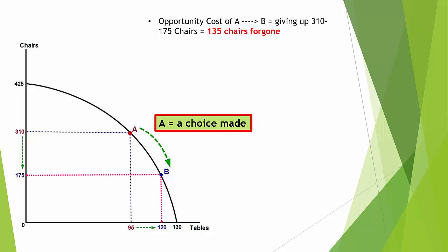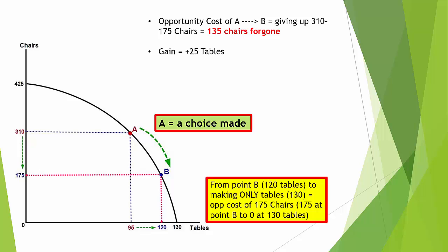This is how a PPF shows choice and opportunity cost in operation. If we then decided to move from point B to producing only tables — moving to the bottom of the PPF axis to produce 130 tables — we gain 10 tables but give up 175 chairs, moving from point B's 175 chairs down to zero chairs. There again we see opportunity cost in operation.